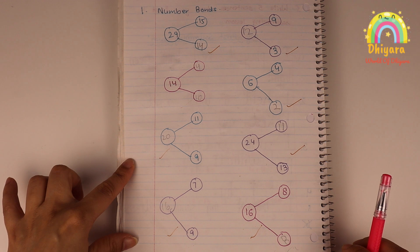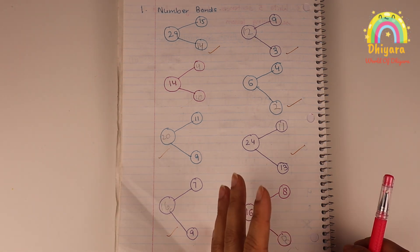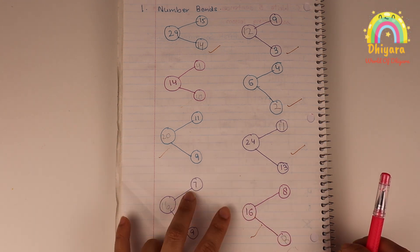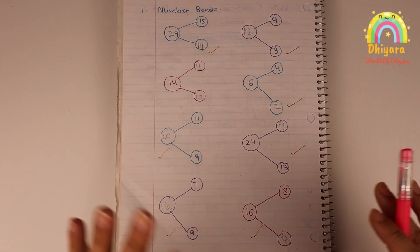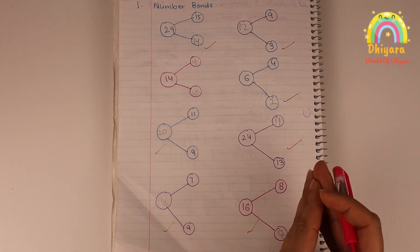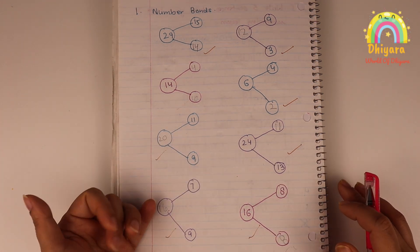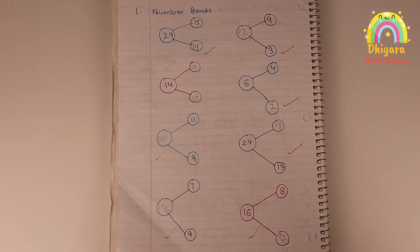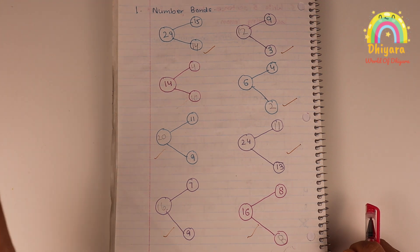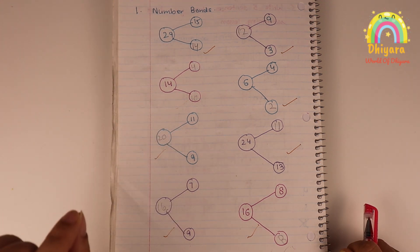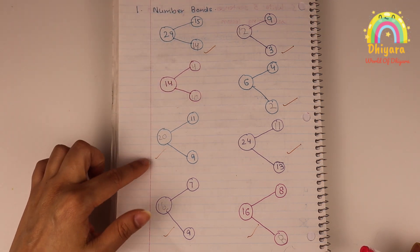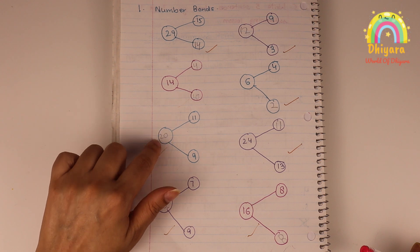The first worksheet is for number bonds. The number bonds concept is very basic, but every now and then you need to give this practice to a child. If the child has a strong number bond concept, they will have a higher skill set. In the previous video, I shared three basic math activities with you, and number bonds was also included. You can look at the activity level — I have a whole number here that was missing.